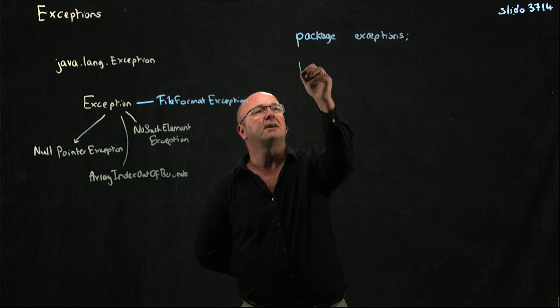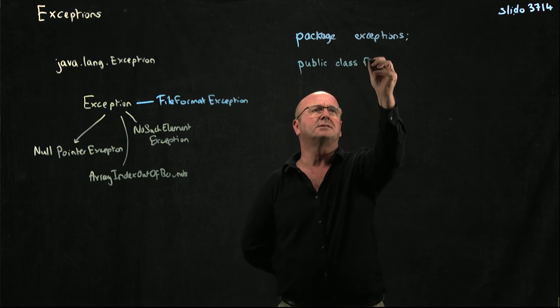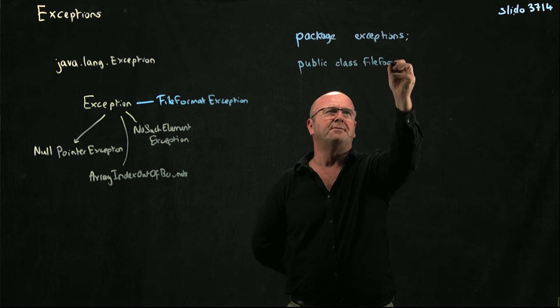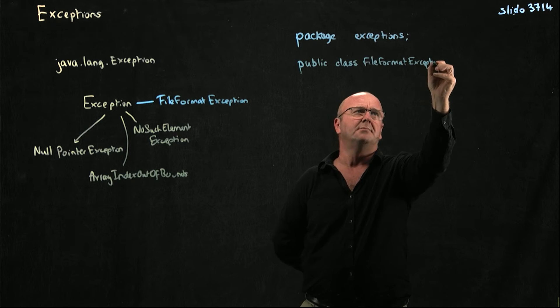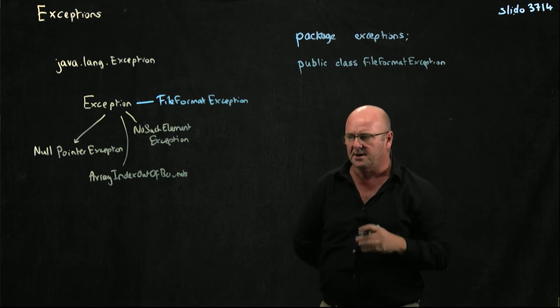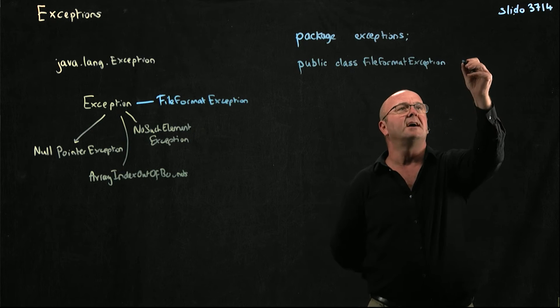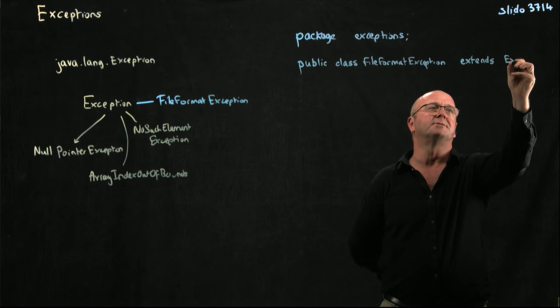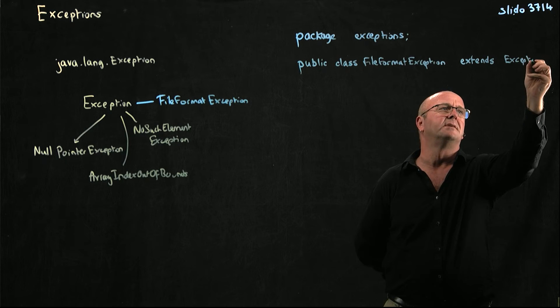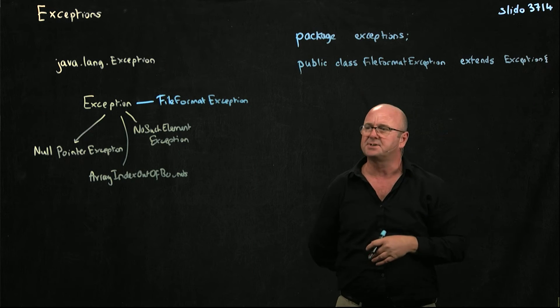And we're going to have a class, public class. Ours is called file format exception. But you can call it whatever you want for other things. For this, you have to call it that. And the key is that we're going to extend exception. We're extending the exception class.